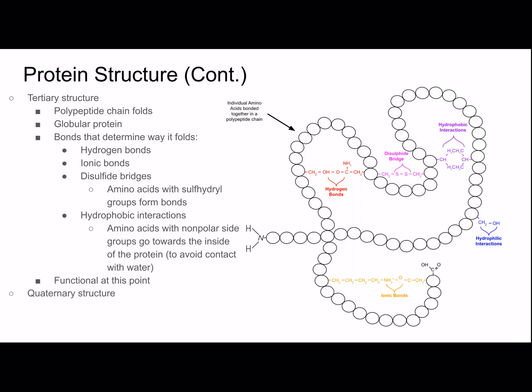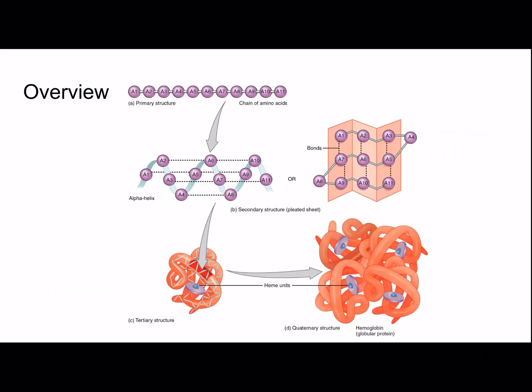Quaternary structure is basically optional — not all proteins have it. This is multiple polypeptides together, so some proteins with just one polypeptide won't have quaternary structure. Here is an overview: primary structure, secondary structure, tertiary structure, quaternary structure — each one influences the next. Amino acid sequence is very important: the primary structure will change the secondary structure, and hence the tertiary and quaternary structure, which will affect its function as well.